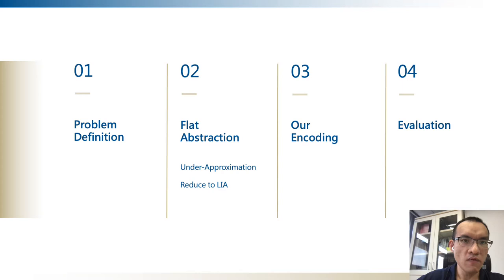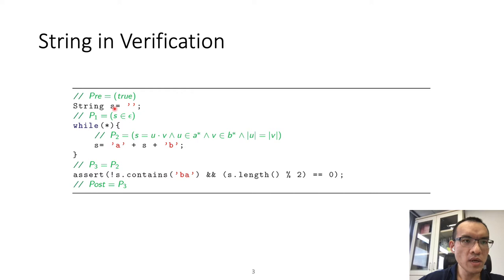We will begin the talk with a simple example. In this code, S is initially empty and we have a non-deterministic loop. In the loop body, we always append A to the beginning and B to the end of string S. This program has an invariant that S is always beginning with a sequence of A and then ending with a sequence of B. The number of A and B will be the same.